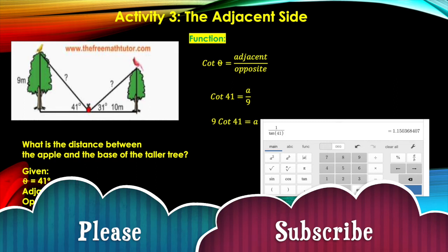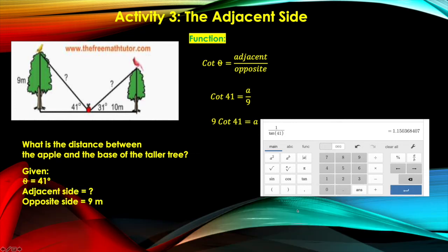But when you type it on the calculator, you would type as 1 divided by tangent 41 degrees. Again, it's 1 divided by tangent 41 degrees. That is putting in the inverse of cotangent function 41 degrees. And the calculator gives us the value of 1.150368407.